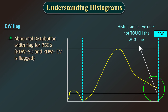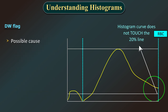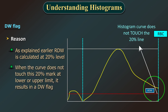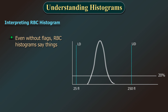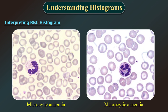DW flag (abnormal distribution width flag for RBCs): RDW-SD and RDW-CV are flagged. The RBC histogram doesn't touch the baseline and ends above the 20% mark, so the RDW cannot be calculated. Possible causes include both the RU and RL causes. RDW is calculated at the 20% level; when the curve does not touch this mark at either the lower or upper limit, it results in a DW flag. Even without flags, RBC histograms convey information: a microcytic anemia will have the bell curve shifted to the left, and macrocytic anemia shifted to the right. Look for respective findings on smear.